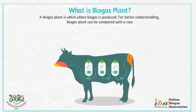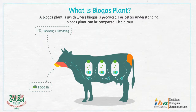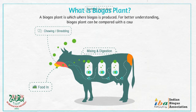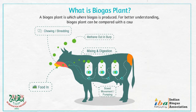In the same manner, food intake by a cow can be called feeding, chewing is crushing, digestion part is the same, and burp is the biogas outlet from the plant. Dung of the cow is the fertilizer that we get from the biogas plant.